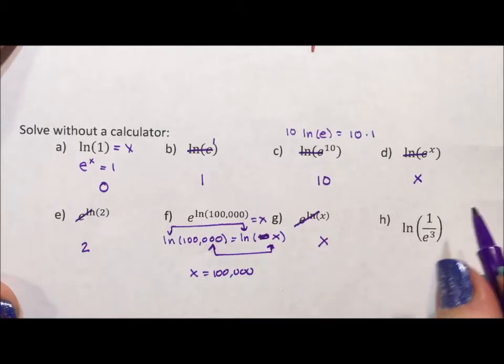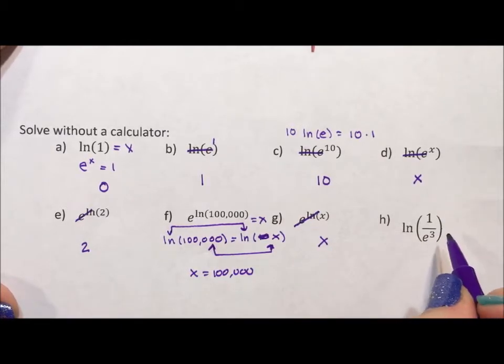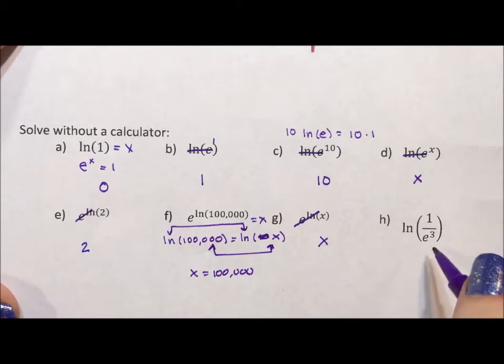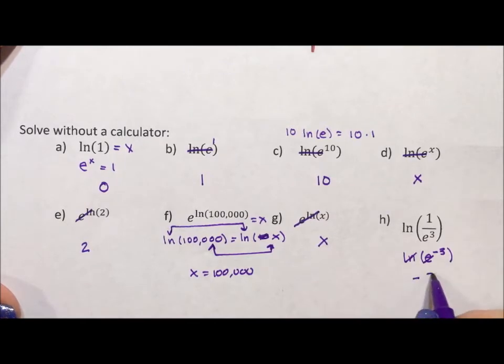And in this case, we have to do a little bit of work. Remember, like I've said in previous videos, if you've seen them, to get this so it's not in the denominator, this is equivalent to natural log of e to the negative 3. Now these guys undo each other, and we're left with negative 3.